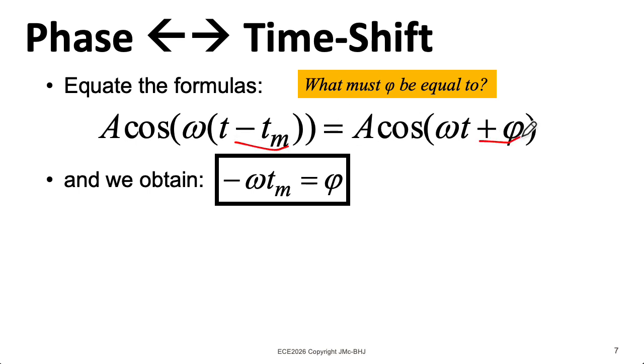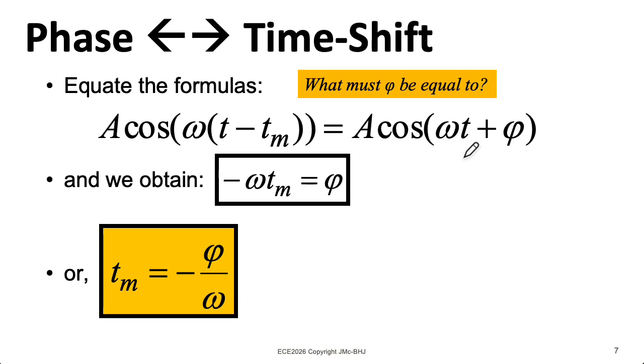I wind up with minus omega tm equals phi. And I could arrange this and write it in terms of the time shift as minus phi divided by omega.